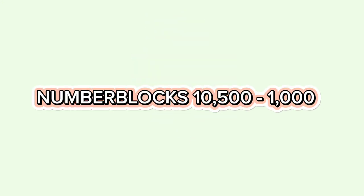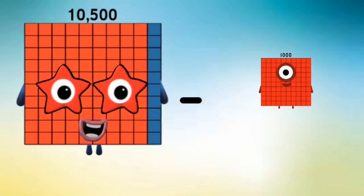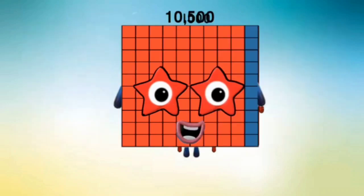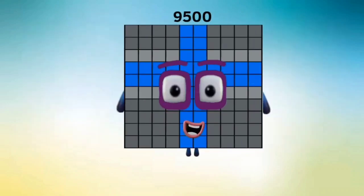Number blocks: 10,500 minus 1,000 equals 9,500.